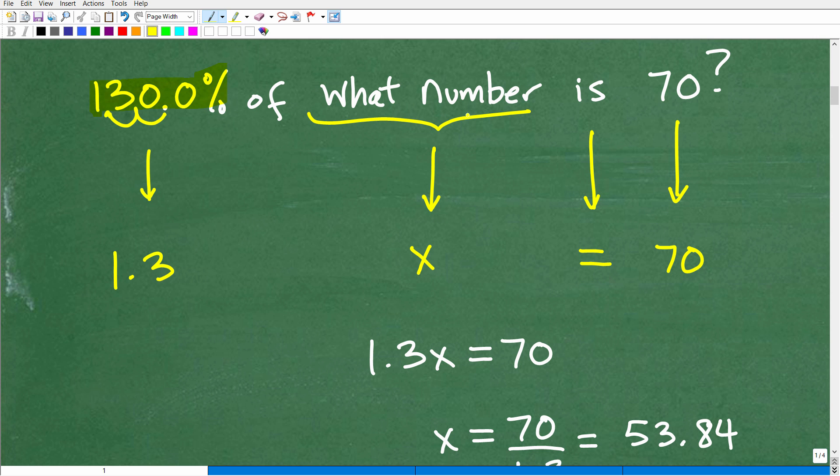So 130% of what number? So in algebra, when you see something like what number, we're looking for some number. Well, that's why we use a variable like x. This is just a placeholder, represents some number, or in this case, what number we're looking for, right? So we'll just use a variable x. Is, when you see the word is in a sentence, and you're interpreting this as a mathematical-like equation, the word is is always the equal sign. So 130% of what number is or is equal to. So this is an equal sign, and of course, this is 70, so we'll write that 70 there.